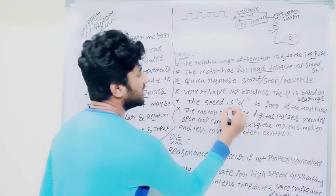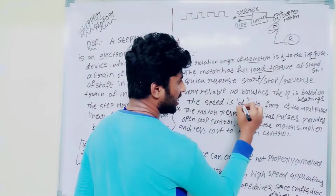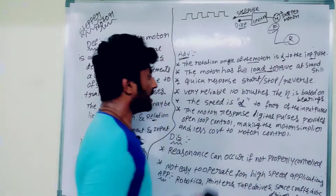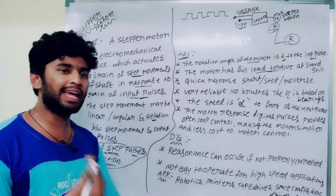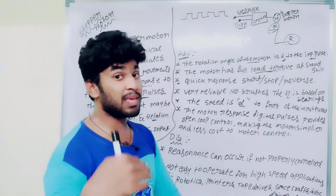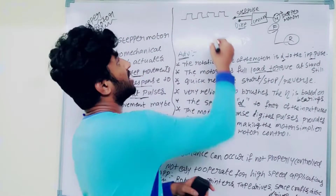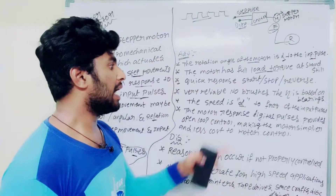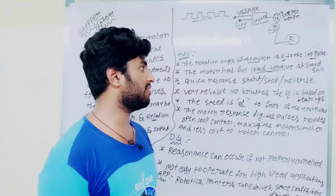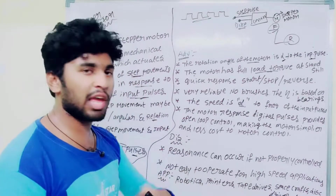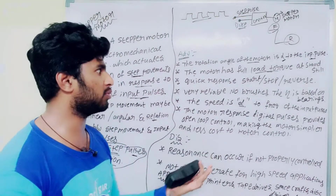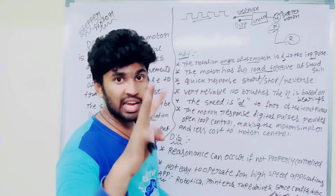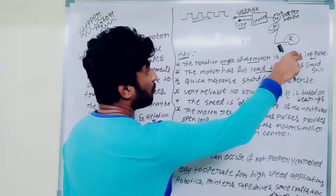The fifth advantage is that the speed is directly proportional to the input pulses. The frequency pulses in the motor are dependent — frequency pulses will increase the speed of the motor. Otherwise, it will not increase. This is related to the angle of the input pulses.